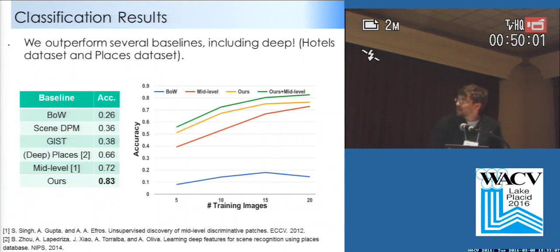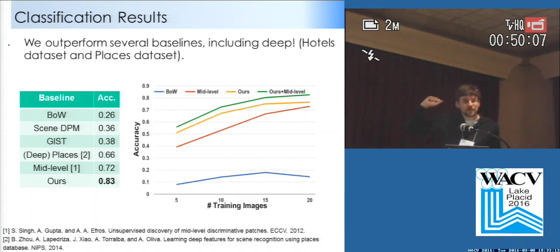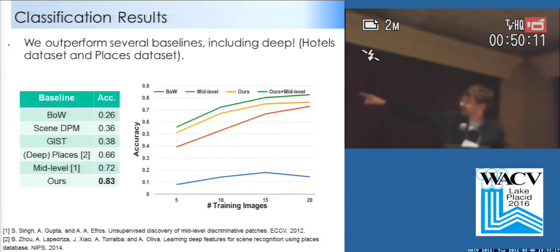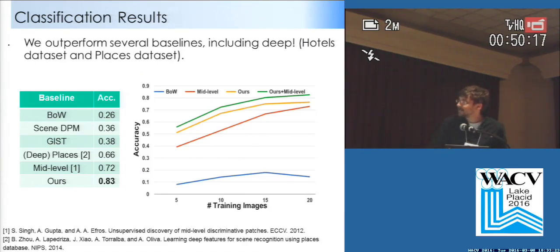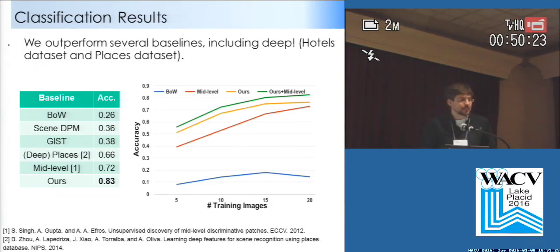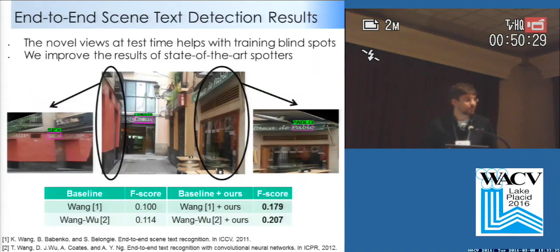We have performed several baselines, including even the all-powerful deep learning. You can see the success rate of the deep features from the Places paper is 0.66, while ours is 0.83. The reason is, as I said, that every learning technique fails under small data assumptions, and our method is designed specifically for these small data situations.